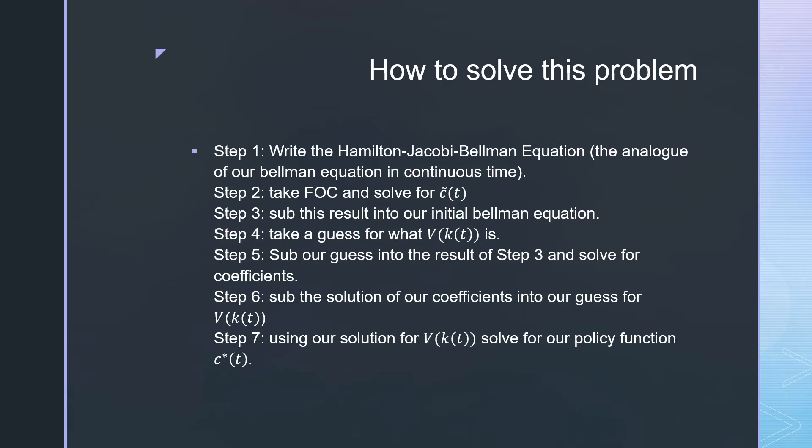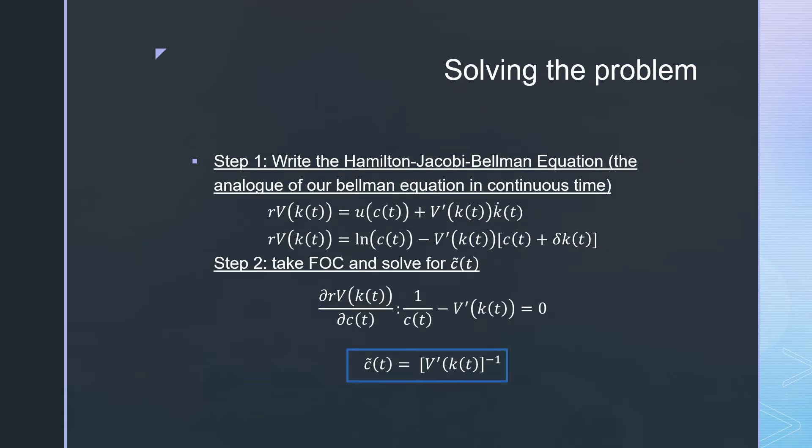Step number one: We're going to write out our Hamilton-Jacobi-Bellman equation. We have it written out here and we're just going to plug in the pieces of our problem, that being our instantaneous preferences and our law of motion here.